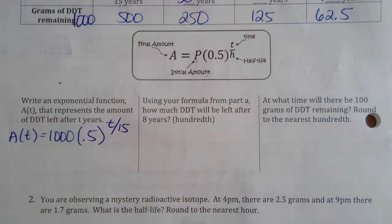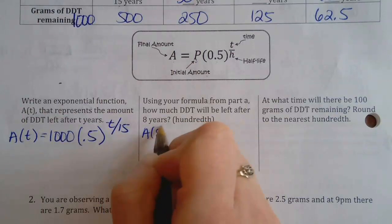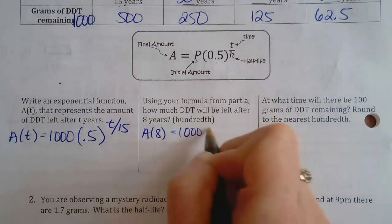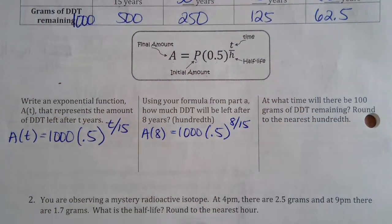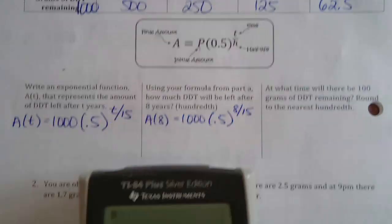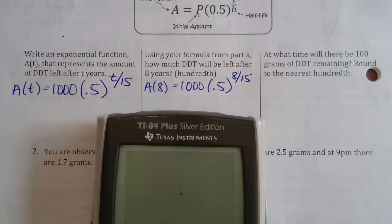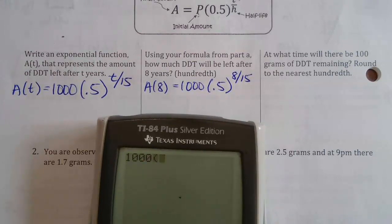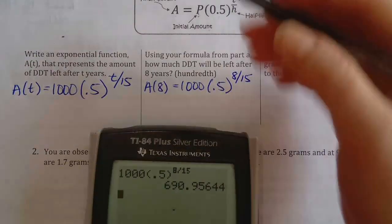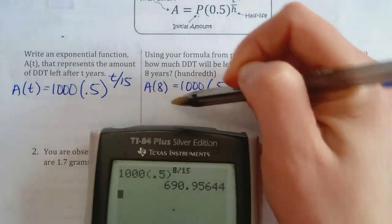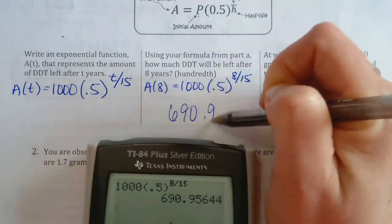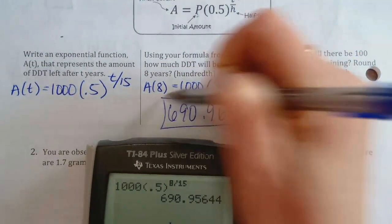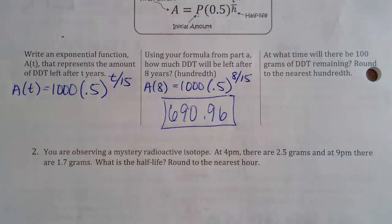Using the formula from part A, how much is left after 8 years? Eight years isn't even one full half-life. So: 1000 × 0.5^(8/15). Type that into the calculator — to the nearest hundredth, that's two decimal places.